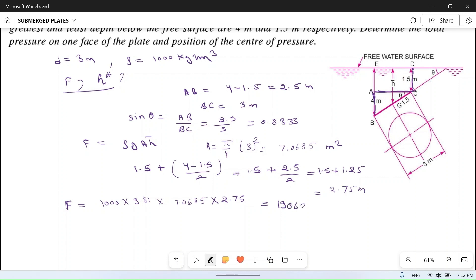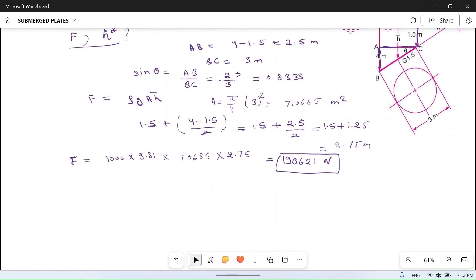Now center of pressure. Center of pressure h star is equal to Ig sin square theta divided by A h bar plus h bar.